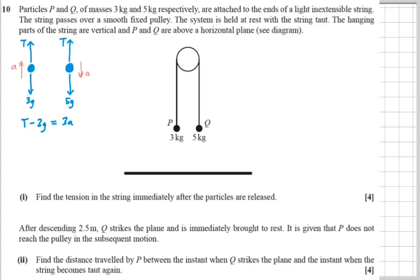If we do the same with the second diagram, but I'm going to change my positive direction now to be down. So now I'm going to have 5G take away T equals MA, which is 5A this time.